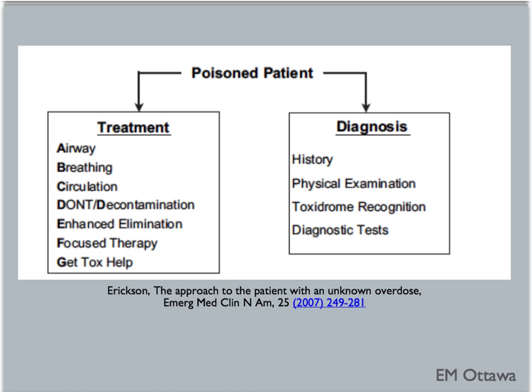The general approach to the poisoned patient is a two-armed method. On the left is treatment and on the right, diagnosis. In real life, these two happen at the same time. We will discuss each component starting with the treatment arm.